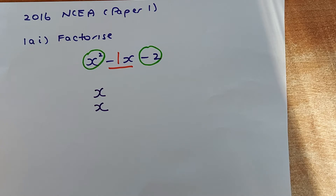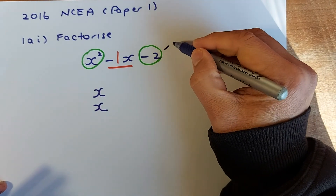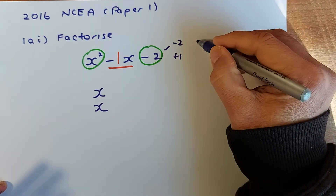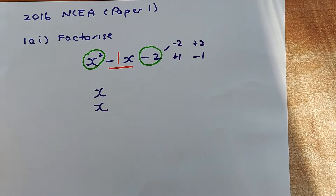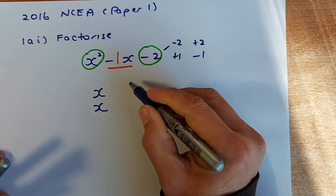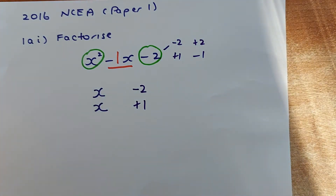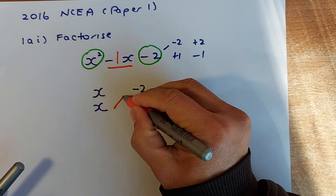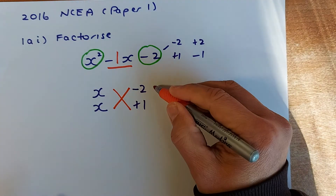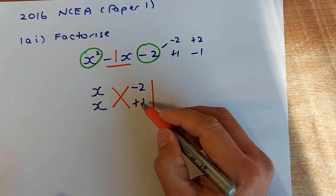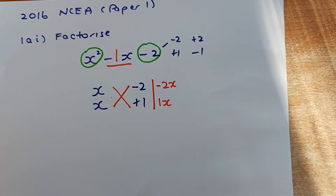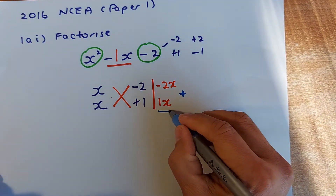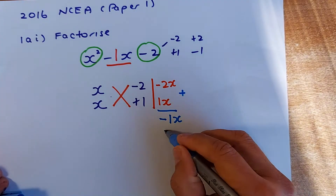Next, find all the factors that multiply to give negative 2. There are two possibilities: negative 2 and positive 1, or positive 2 and negative 1. We trial and error — try the first one: negative 2 and positive 1. Now cross multiply: x times 1 is +1x, and x times negative 2 is -2x. The last step is to add the two results on the right: -2x plus 1x gives negative x.